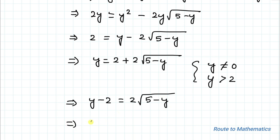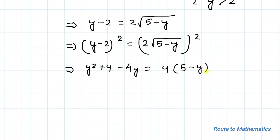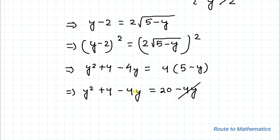Again squaring both sides, we have (y - 2)² = (2√(5 - y))². This implies y² + 4 - 4y = 4(5 - y), which gives y² + 4 - 4y = 20 - 4y. The 4y terms cancel out, so we have y² + 4 = 20.